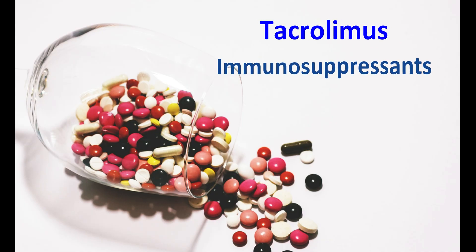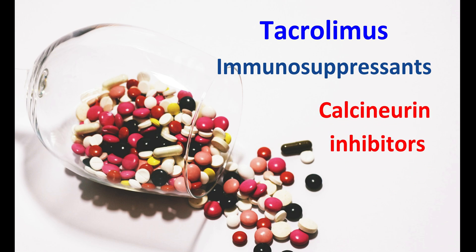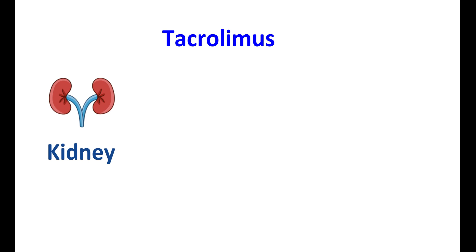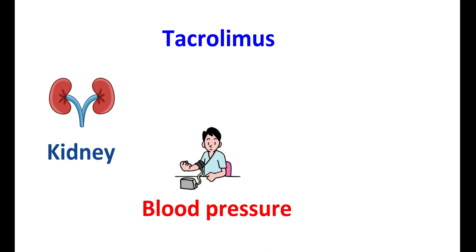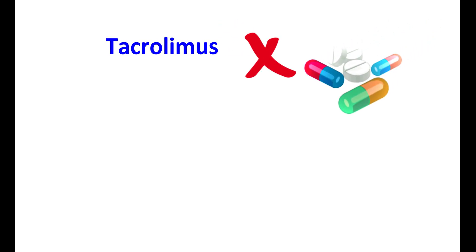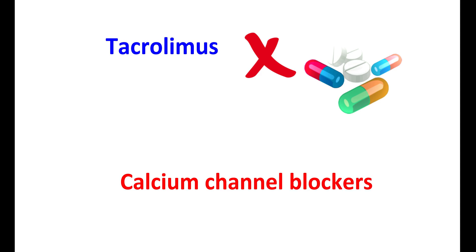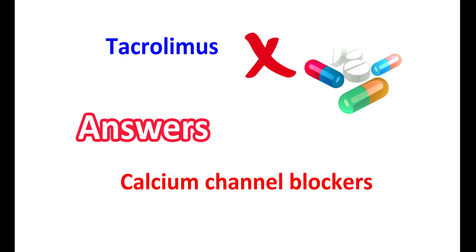Tacrolimus is one of the immunosuppressants. This drug belongs to the category of calcineurin inhibitors. What is the effect of this medication on the kidneys? Whether it raises blood pressure, can it be controlled by antihypertensive agents, which type of medication should be avoided with tacrolimus, and can calcium channel blockers be used? This video answers all these questions.